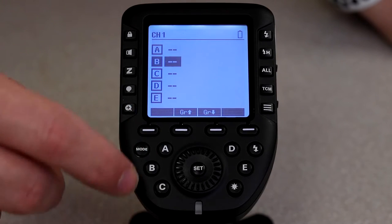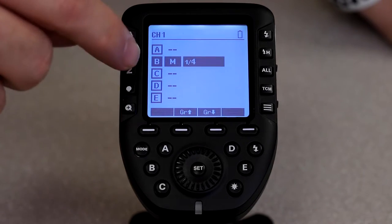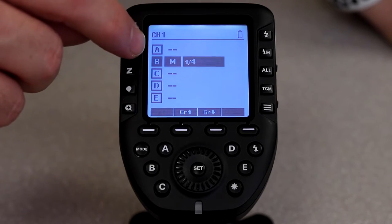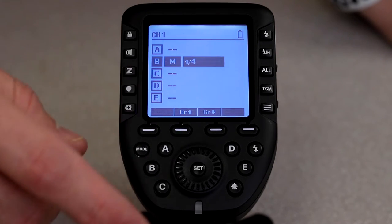So now I'm going to come to B and hit mode, and I'm on manual. Okay, so now I've activated group B. Any flashes that are on group B will pop if they're on the same channel.